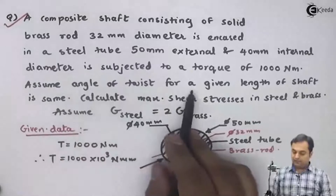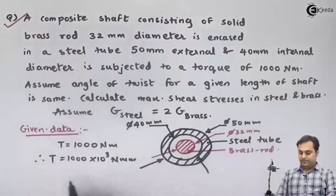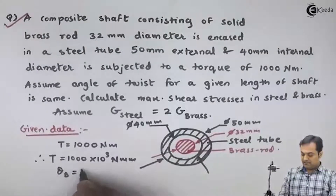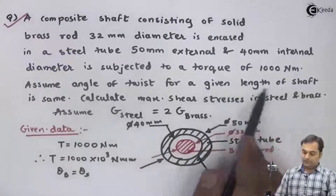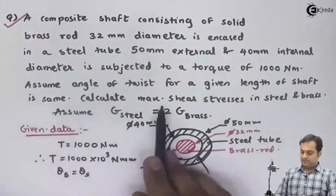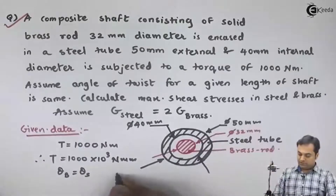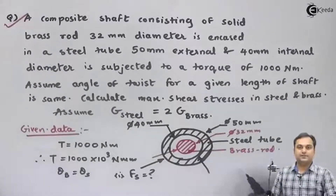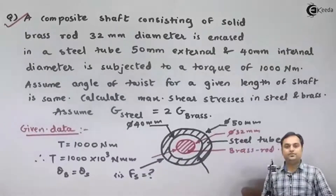Next: assume angle of twist for a given length of shaft is same — meaning theta for brass equals theta for steel. We have to calculate the maximum shear stress in steel and brass respectively. Let us try to get the solution for this problem.